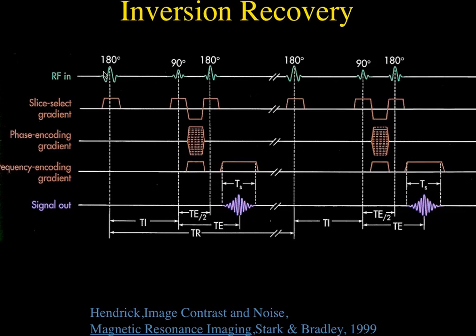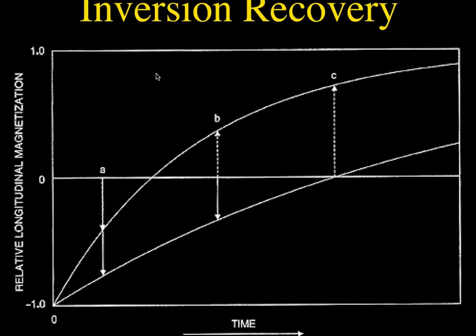You can also do this using first an inversion pulse — inversion recovery. You give a 180-degree pulse first, wait until the magnetization starts recovering, then give a 90-degree pulse, 180-degree pulse, and get an echo. If this TI time is fairly short, you can nullify fat signal; if it's longer, you can nullify water signal. That's how we get STIR images and FLAIR images. If TI is short, you catch fat when it has zero bulk magnetization in the z-direction — the 90-degree pulse produces nothing from fat.